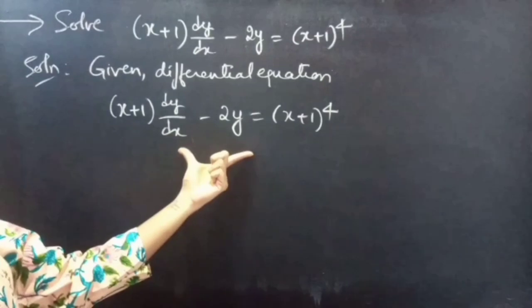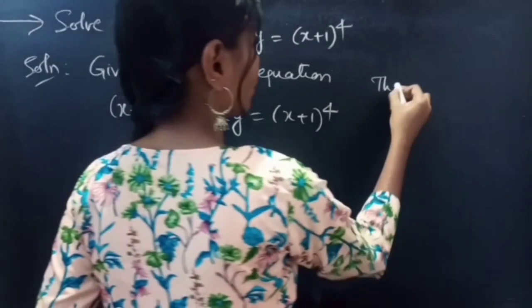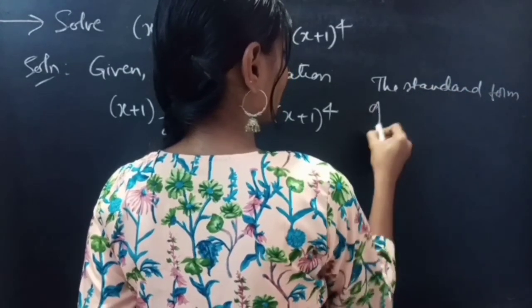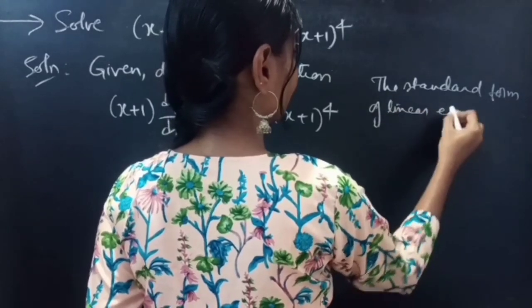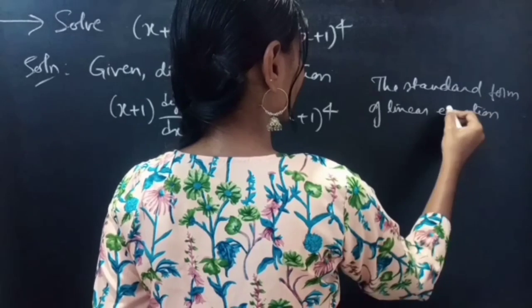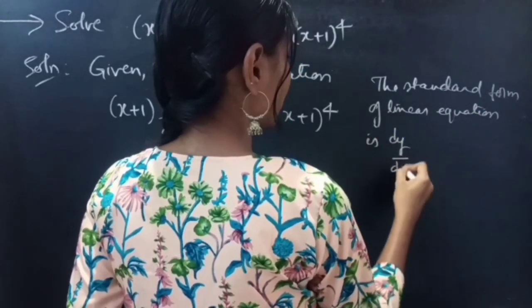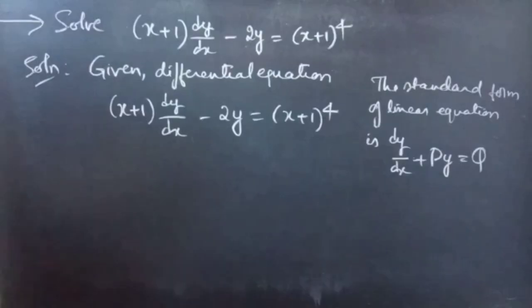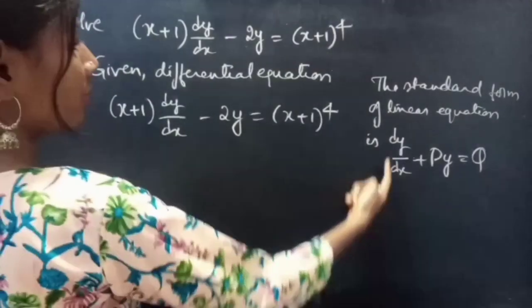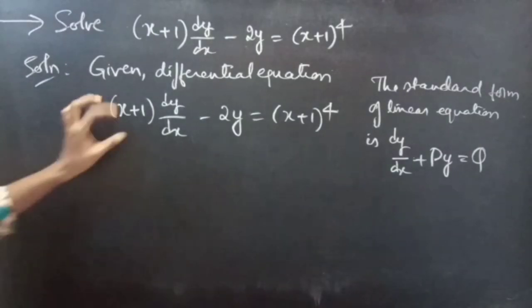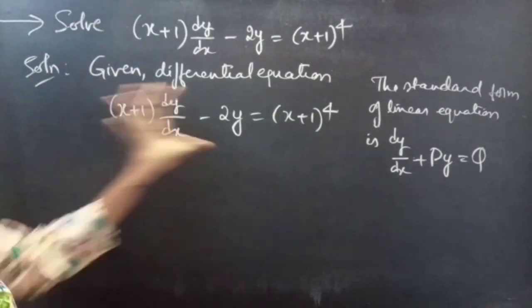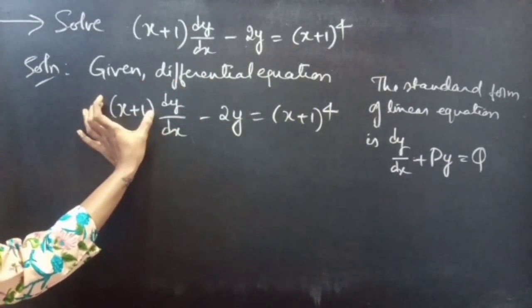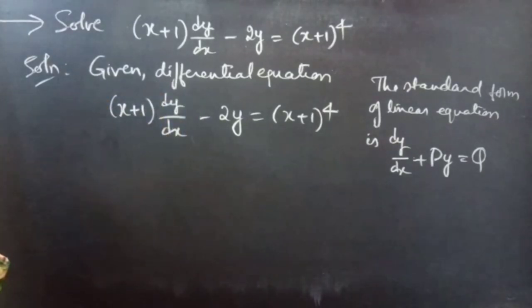We are going to reduce the given equation to the standard form of a linear equation. We know that the standard form of a linear equation is dy/dx plus P(x)·y equals Q, which is a linear equation in y. Here, if you notice, the coefficient of dy/dx is 1, but here you are having (x+1). So in order to reduce this to standard form, we need to eliminate (x+1) as a coefficient of dy/dx.